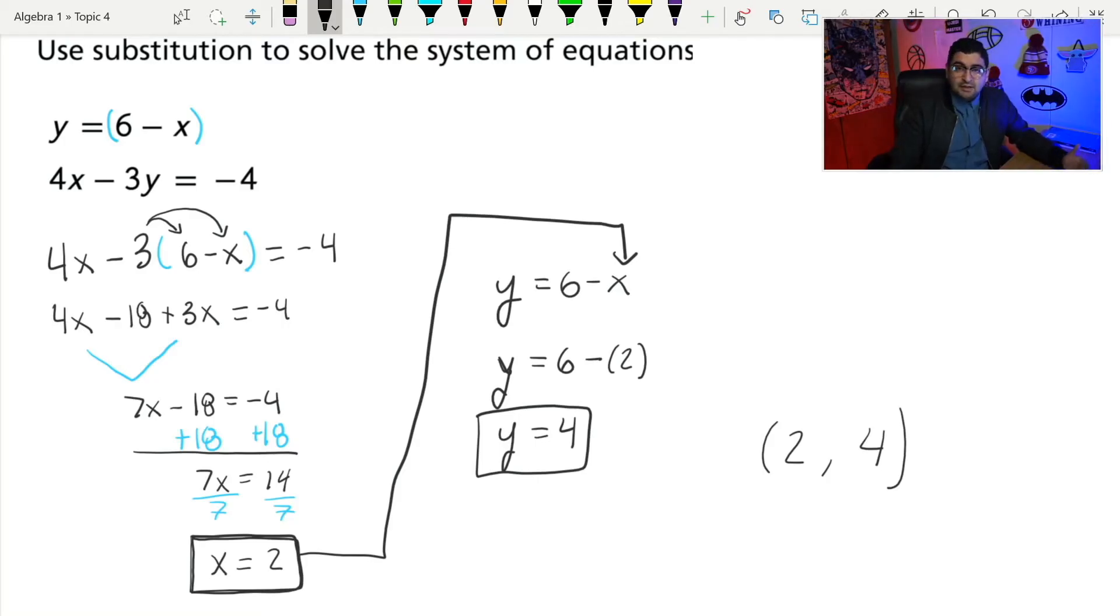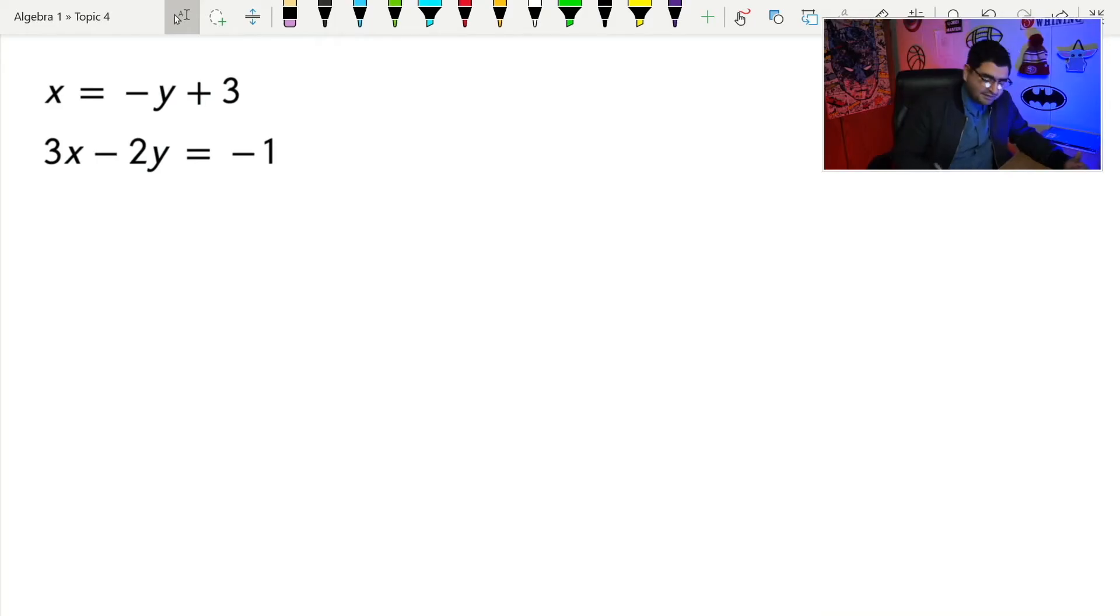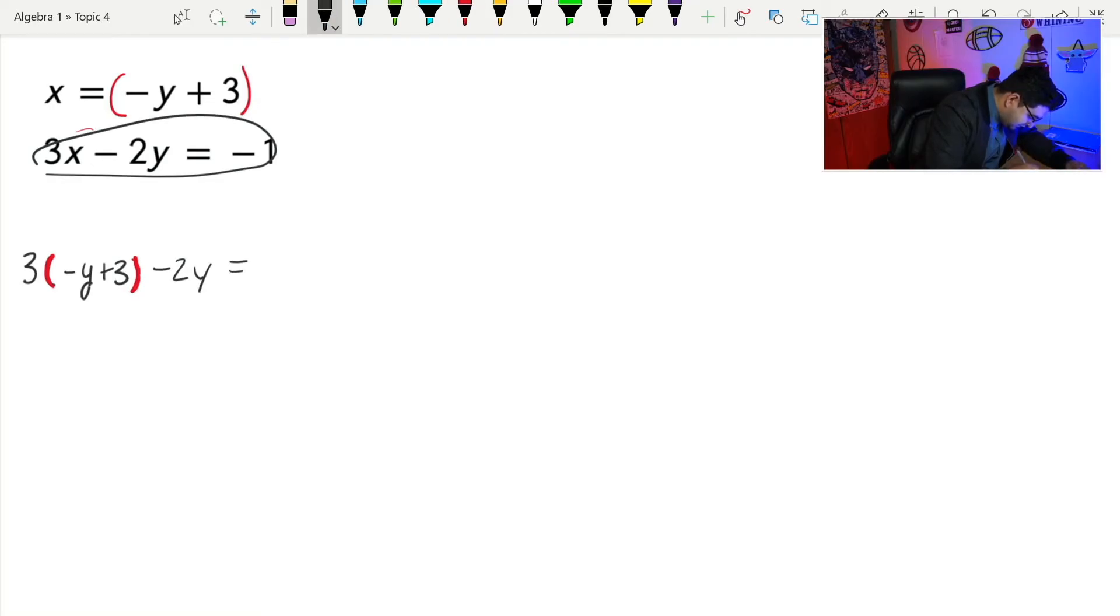Now sometimes we'll substitute y, but we can also substitute x. So let's go ahead and look at an example where we're going to substitute in x. So here they tell me that x equals negative y plus three. And underneath that, I have an equation 3x minus 2y equals negative one. So what I want to do this time is I want to take what x equals, which is negative y plus three, and I want to plug it in for the x on the bottom. So that would end up getting me three times negative y plus three. And everything else from this equation stays the same. Minus 2y equals negative one.